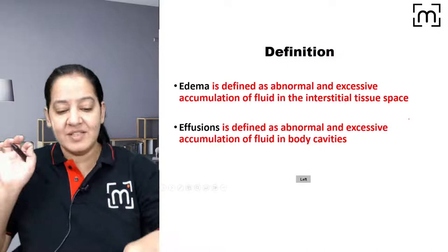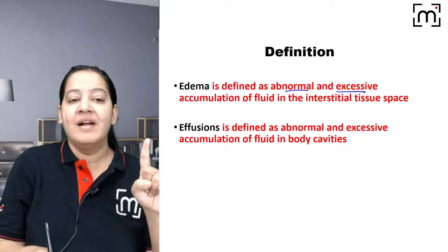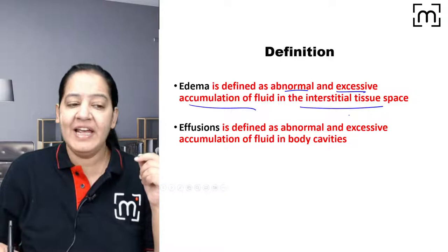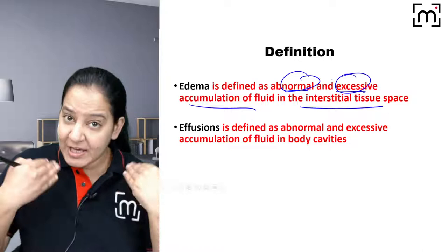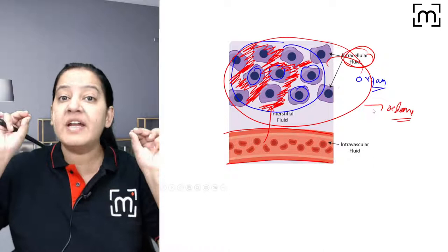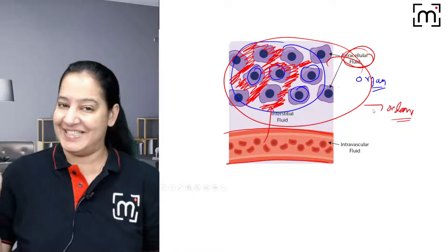The definition of edema is: edema is the abnormal and excessive accumulation of fluid in the interstitial space. Learn the name of this space — it is the interstitial space. This diagram helps you understand how fluid accumulates between the cells, and that is edema.